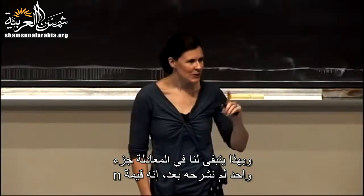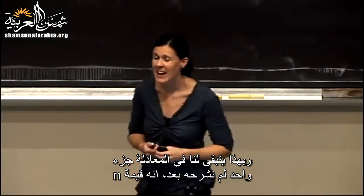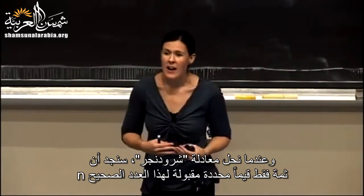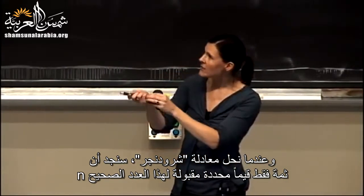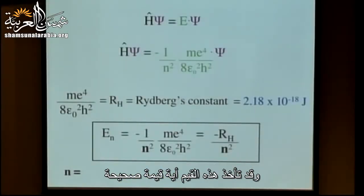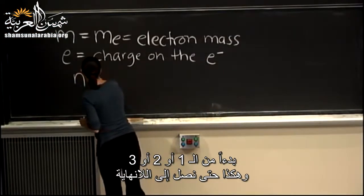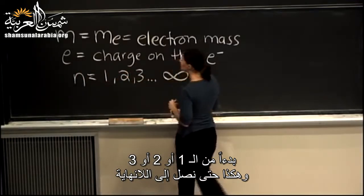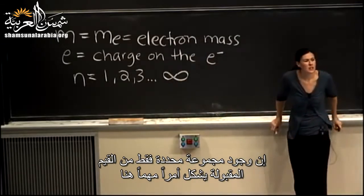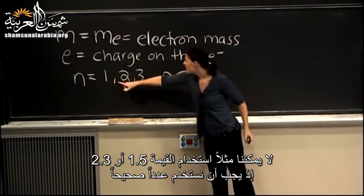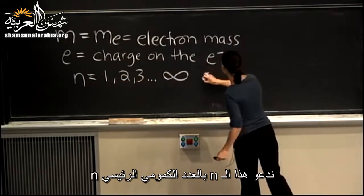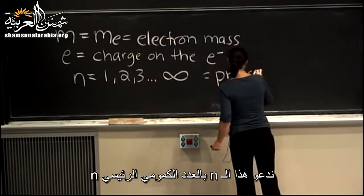The one unexplained part remaining is N. When you solve the Schrödinger equation, you find only certain allowed values of this integer N — ranging from N equals 1, 2, 3, all the way up to infinity. You can't have 1.5 or 2.3 — only these integer values. This N is called the principal quantum number.